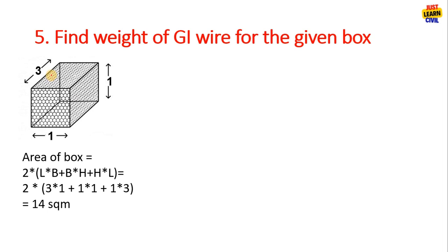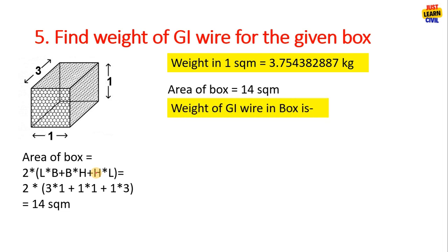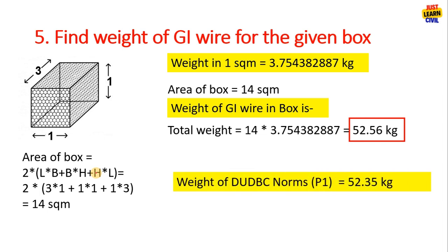Now find the area of this box surface area by 2 into LB + BH + HL and multiply the area with the found kg. We get the total kg of the GI wire used in the box.